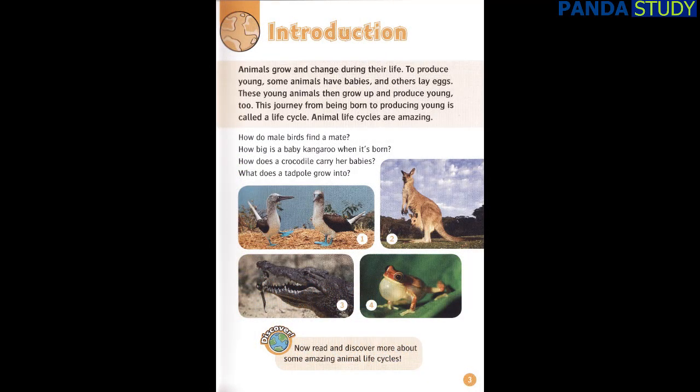Animals grow and change during their life. To produce young, some animals have babies and others lay eggs. These young animals then grow up and produce young too. This journey from being born to producing young is called a life cycle. Animal life cycles are amazing.